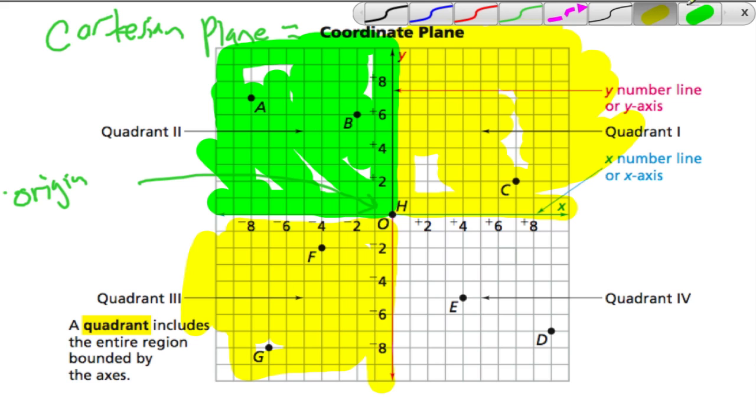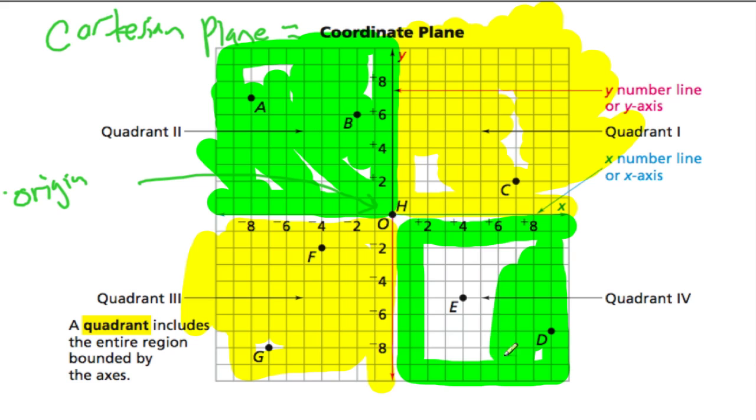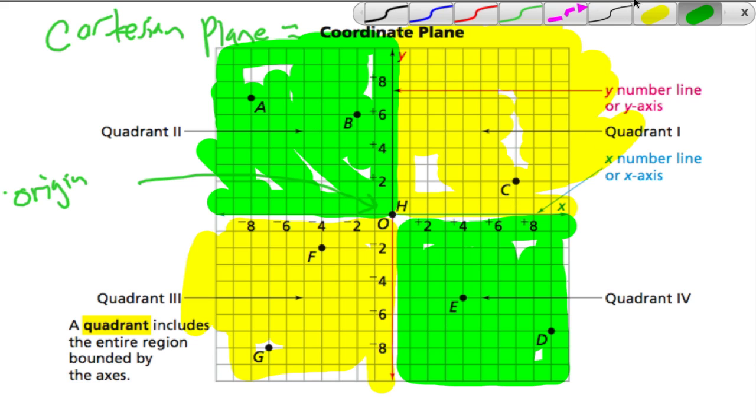And then we're going to also highlight the fourth quadrant in green, because that's kind of related to the second quadrant. Because here, in this quadrant, the second quadrant, we have negative x and positive y. And here we reverse that. We have positive x and negative y.